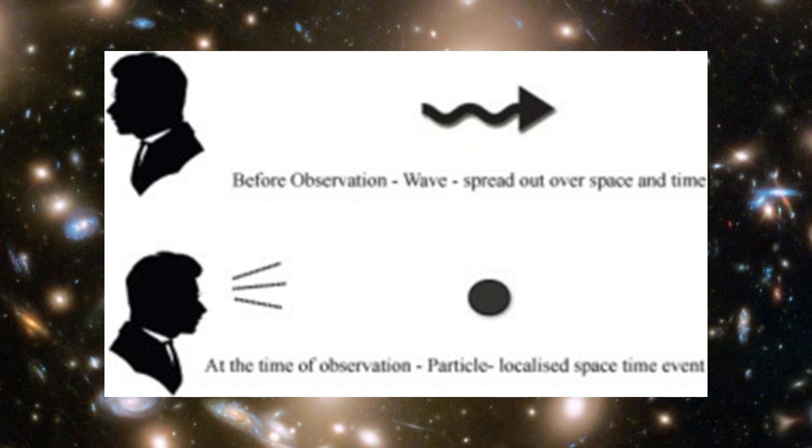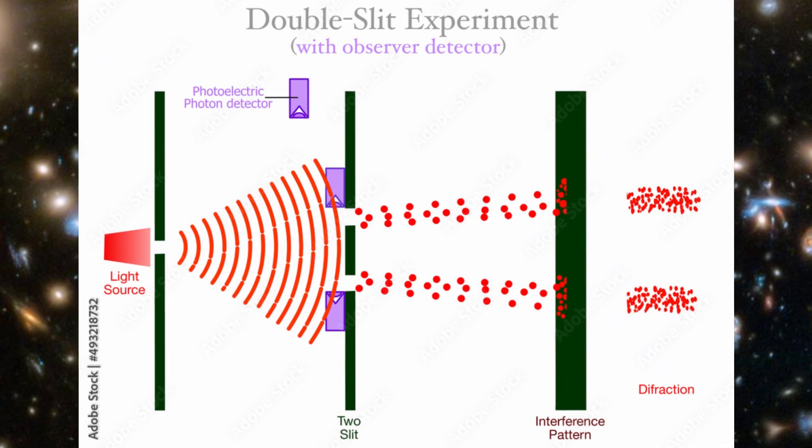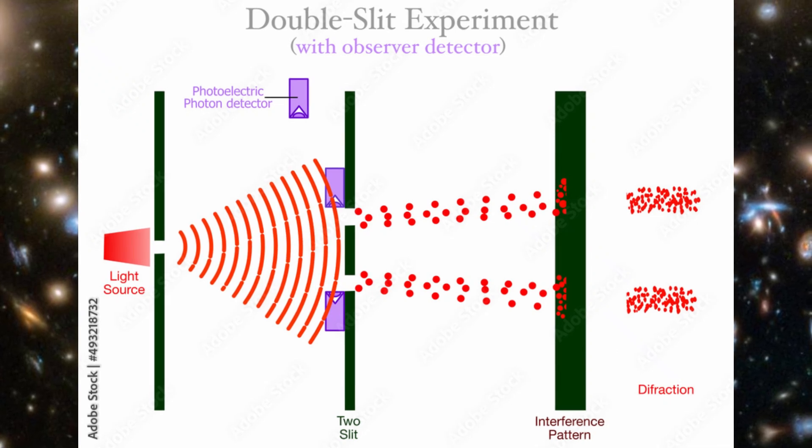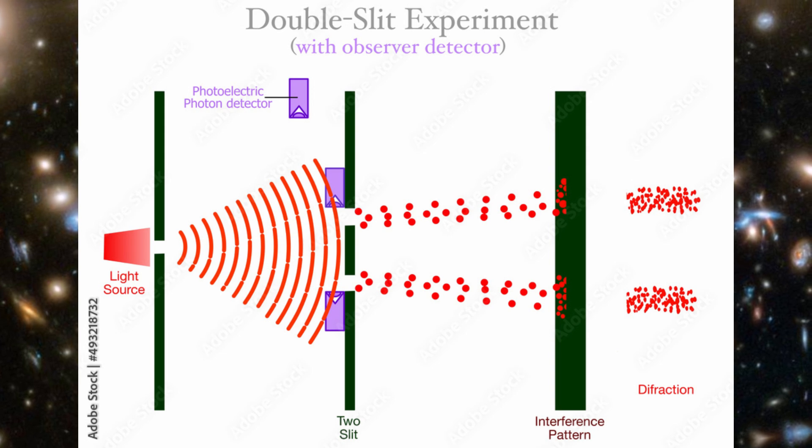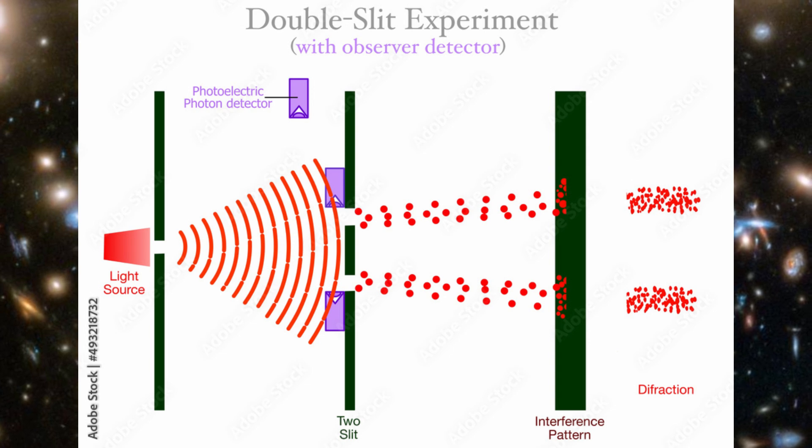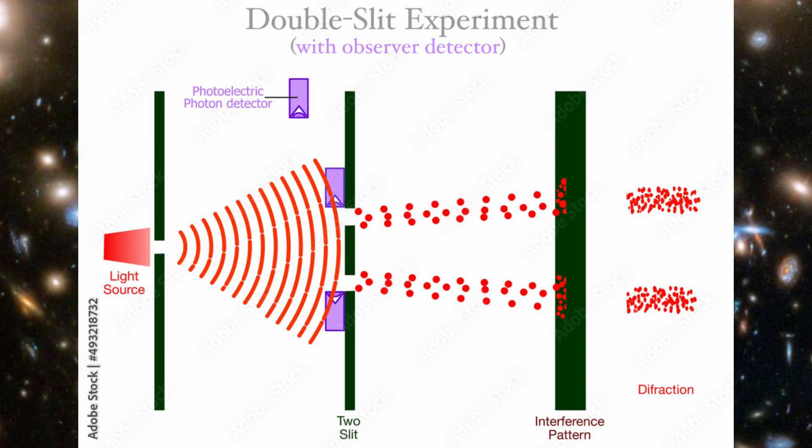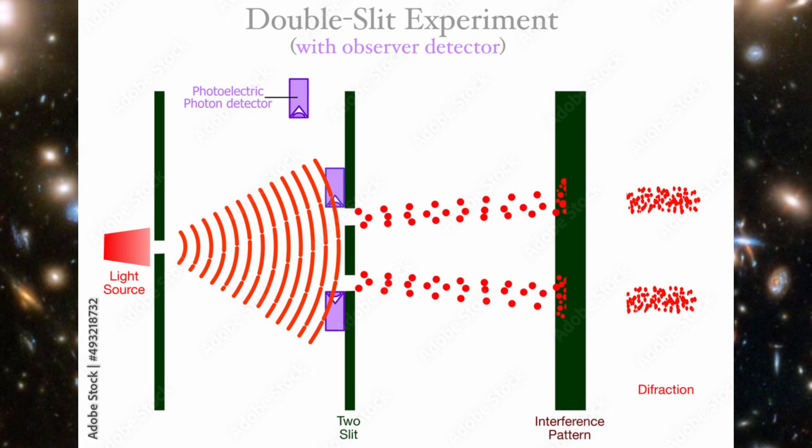In quantum systems, if you observe something often enough, you can actually stop it from changing. This is called the quantum Zeno effect, named after Zeno's paradoxes, where motion becomes impossible if you keep slicing time into smaller and smaller bits. Measure an unstable atom often enough, and it won't decay. The act of watching literally freezes time for it.